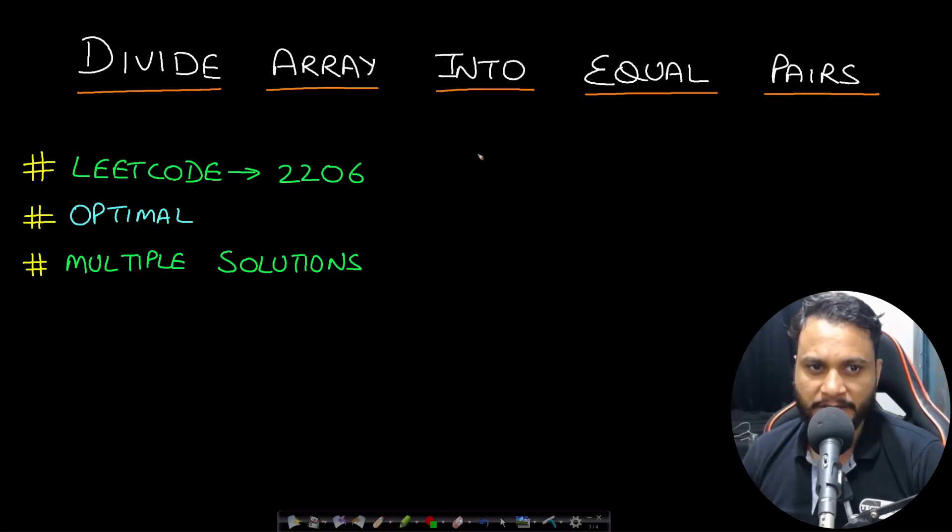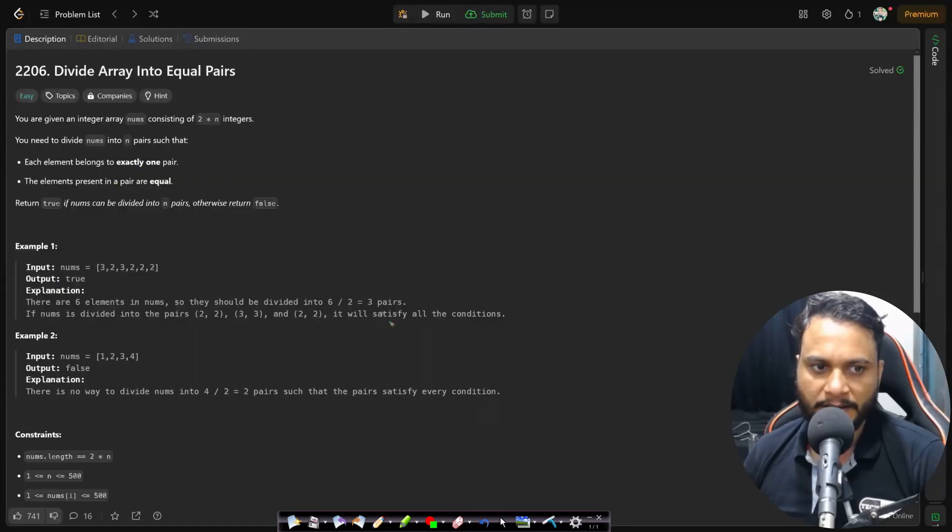Hello guys, welcome back to take dose. In this video we will look at divide array into equal pairs problem, which is from LeetCode number 2206. We will be looking at three different solutions.